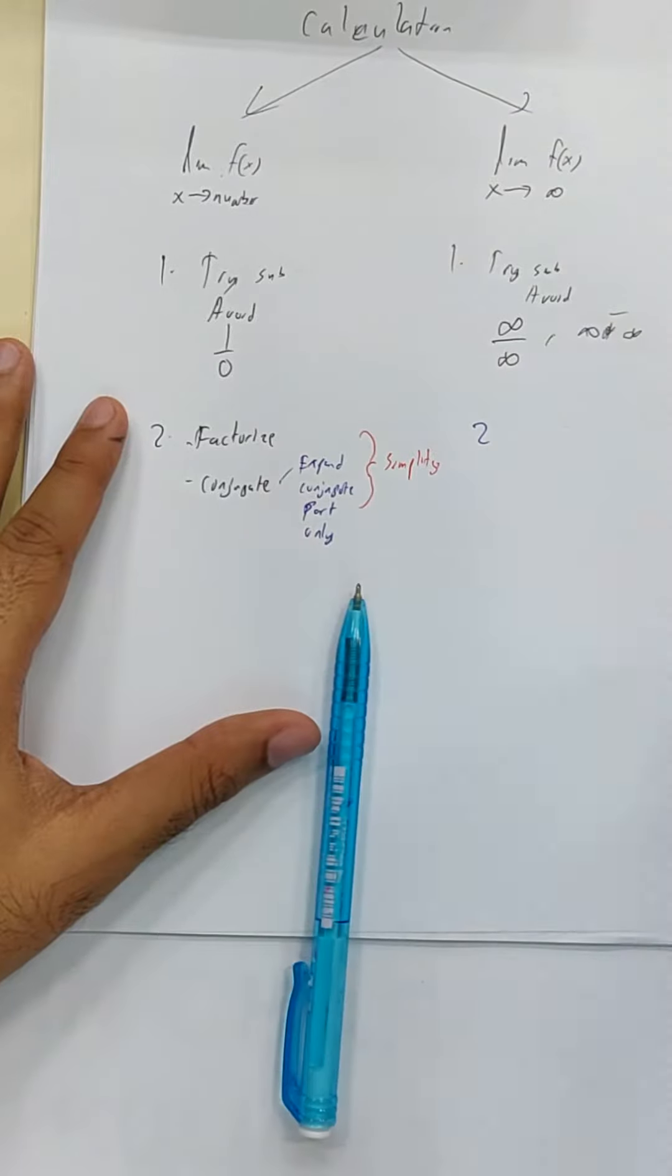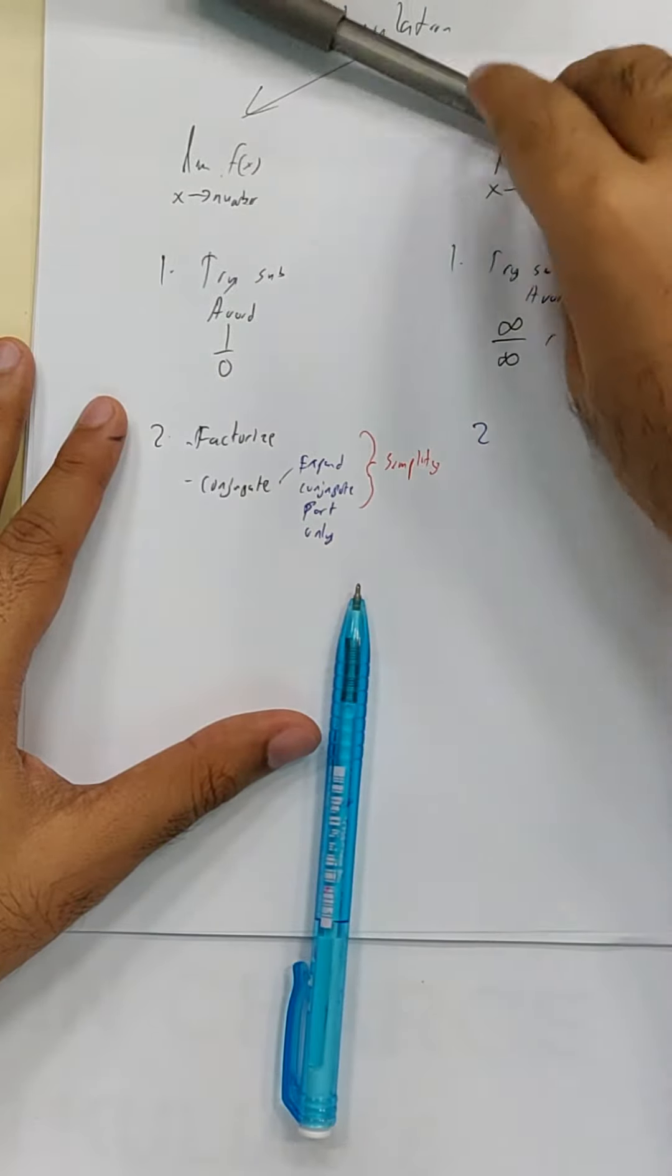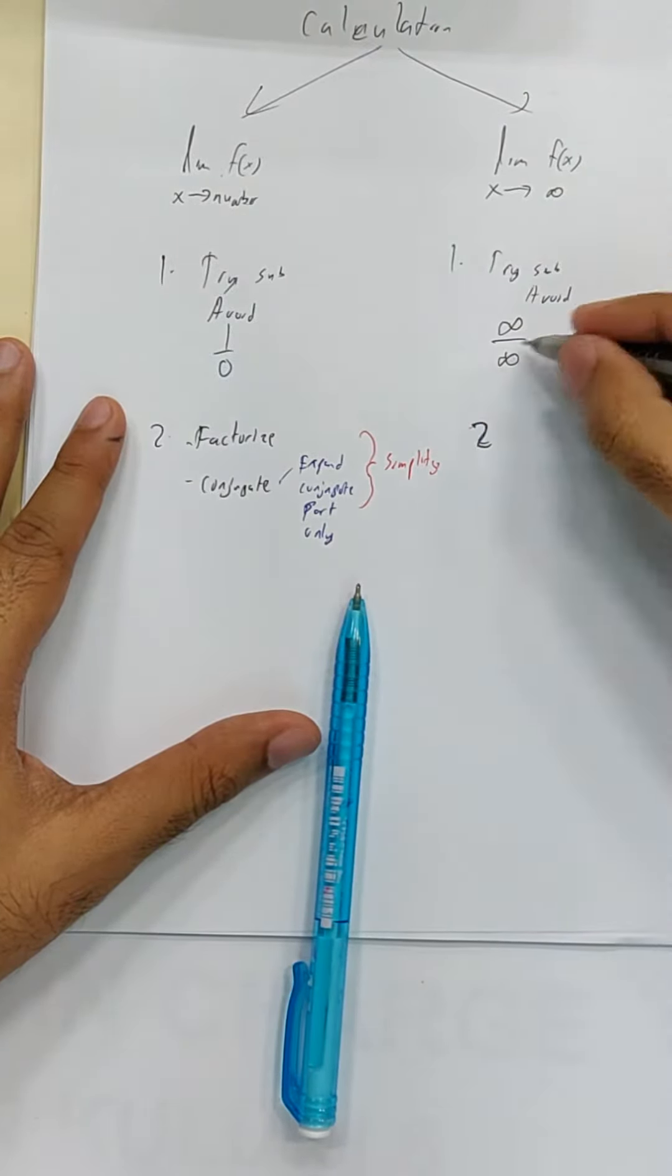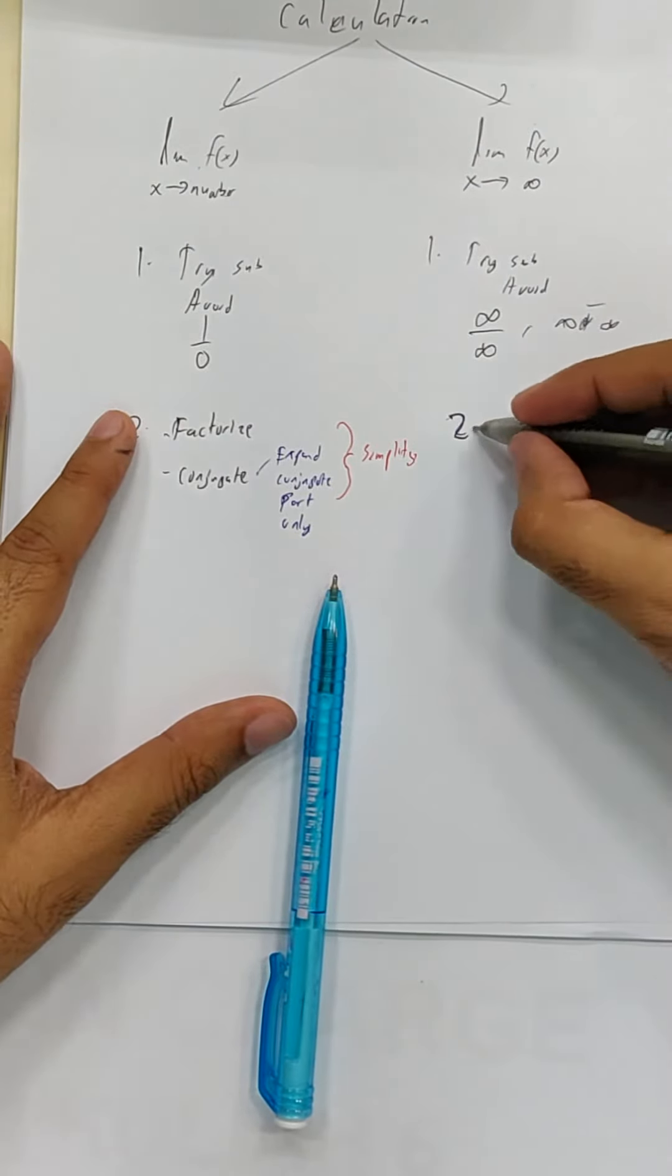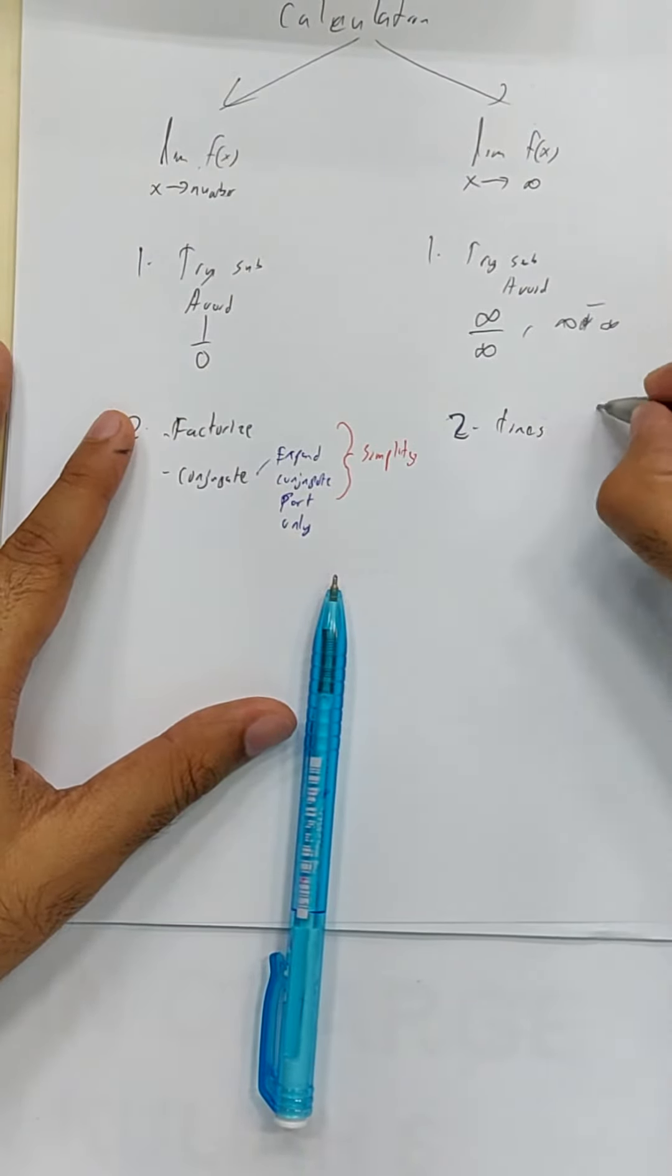What about for infinity? If you got yourself into this situation, you times 1 over x, 1 over x.